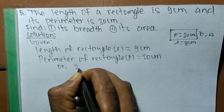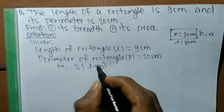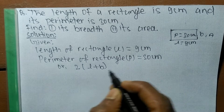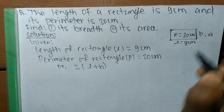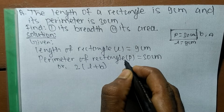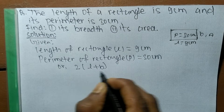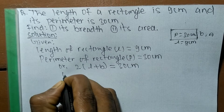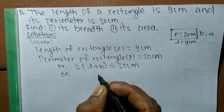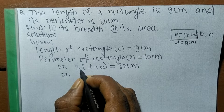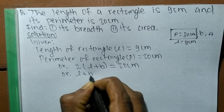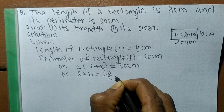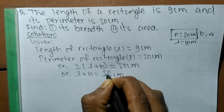The perimeter of a rectangle formula is 2 times (L + B), where L is the length and B is the breadth of the rectangle. So: 2 × (L + B) = 30 centimeters. Moving the 2 to the opposite side it becomes division, so 30 ÷ 2 gives us L + B = 15 centimeters.